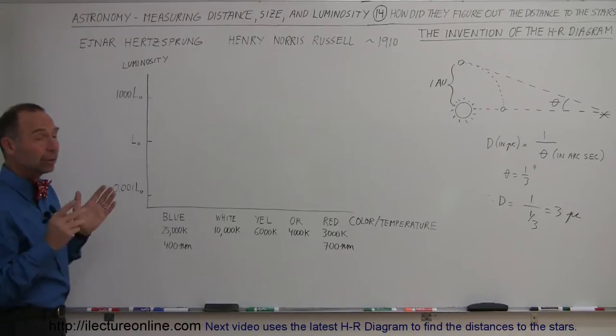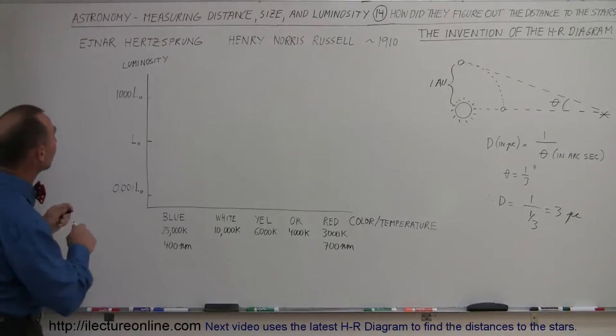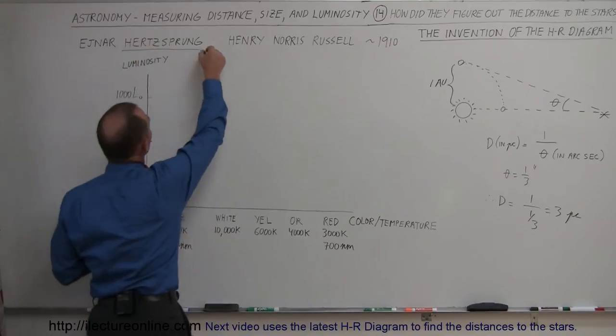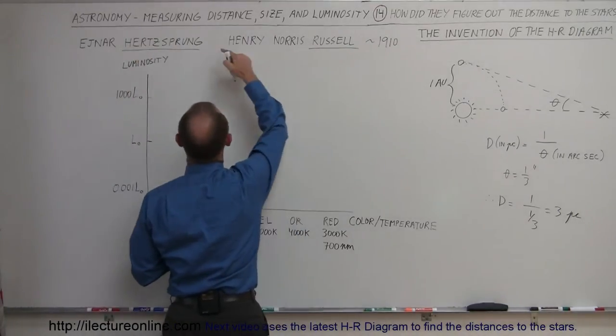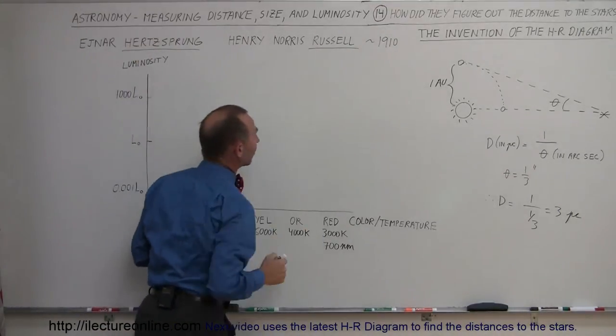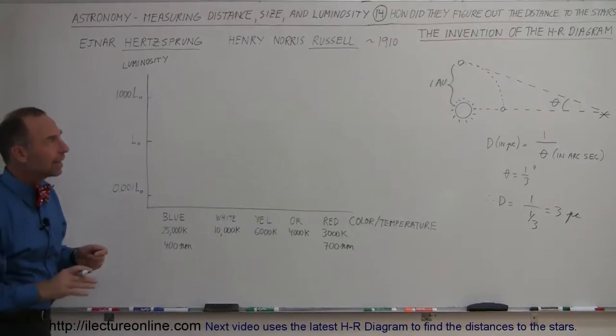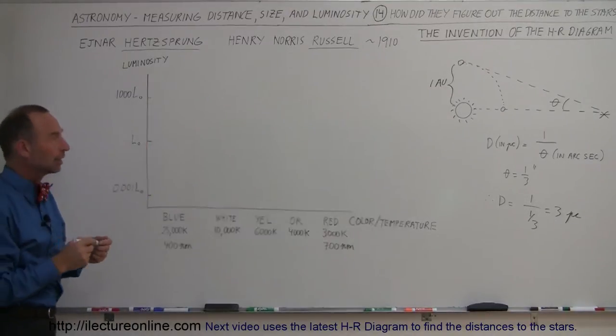Well, who did that? Turns out there are two individuals, Hertzsprung and Russell. Hertzsprung was a Danish astronomer, Russell was an American astronomer, and independently they probably didn't know from one another that they were doing this.